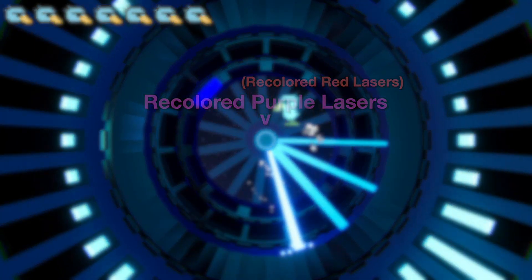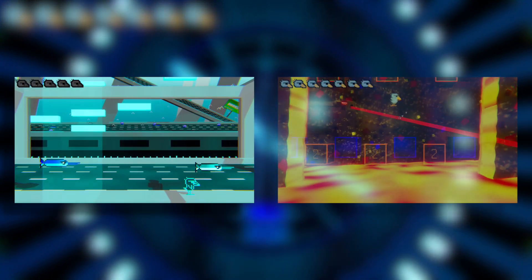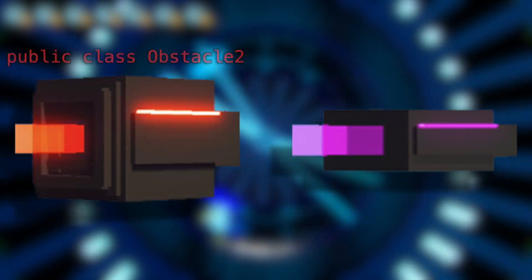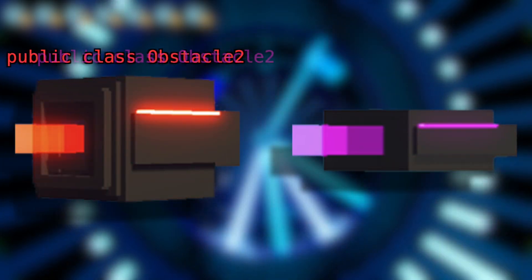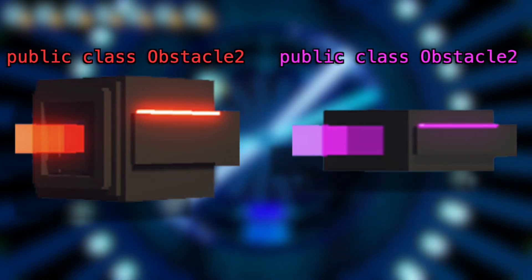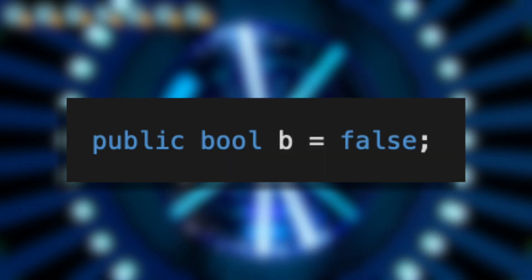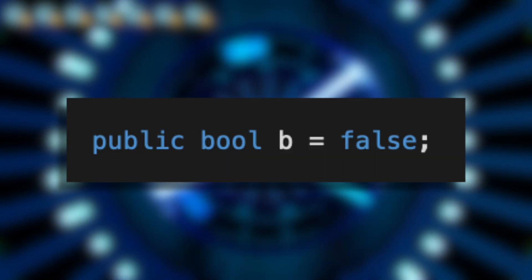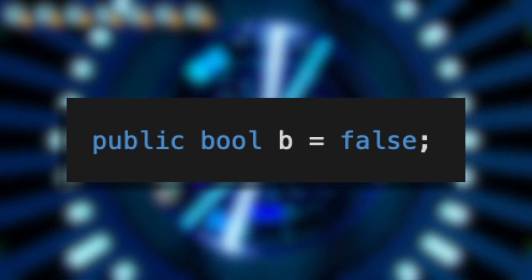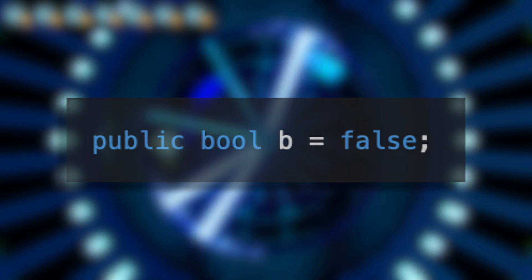The first two obstacles I made were the blue obstacle and the red laser. When I wanted a purple laser, I decided it would be easier to reuse the script for the red laser. Red and purple lasers get differentiated with a boolean called B — and that's just called B. I would never write it like this today.